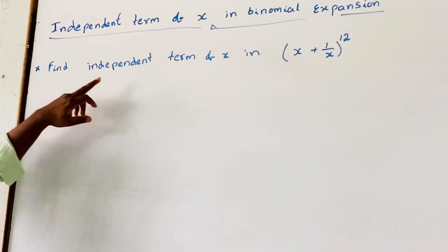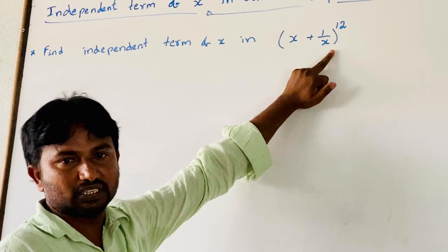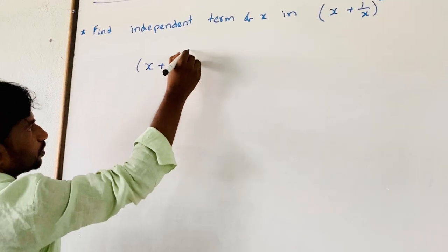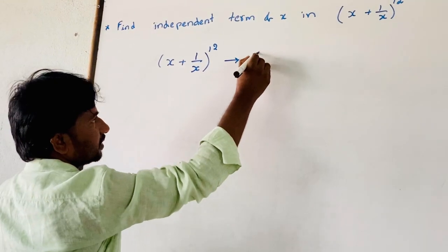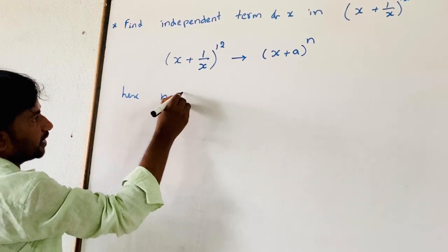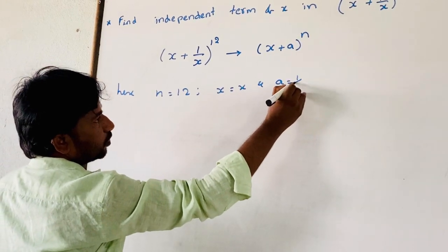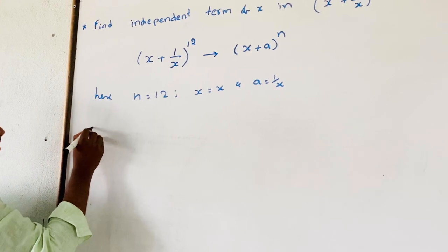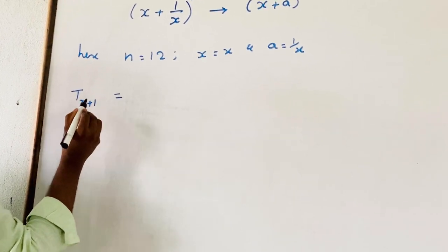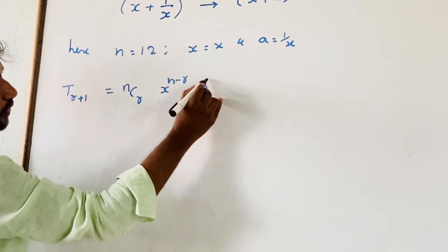For example, find the independent term of x in the binomial expansion of (x + 1/x) all to the power 12. Comparing with (x + a)^n, here n equals 12, x means x, and a is equal to 1/x. You know that the general term of the binomial expansion of (x + a)^n is T(r+1) = nCr · x^(n−r) · a^r.